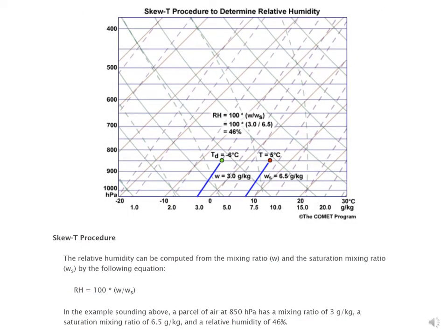Now that we have the mixing ratio and the saturation mixing ratio, we can determine the relative humidity. The relative humidity can be computed as 100 times the ratio of the mixing ratio to the saturation mixing ratio. In the example above, our mixing ratio was 3 and our saturation mixing ratio was 6.5. Taking that ratio and multiplying by 100 gives a relative humidity of 46 percent.